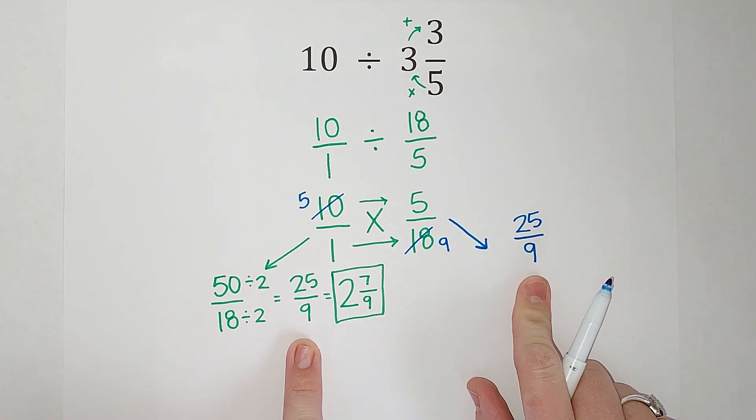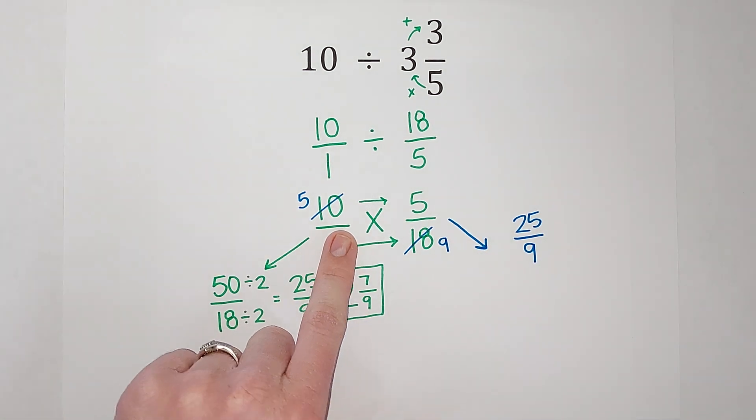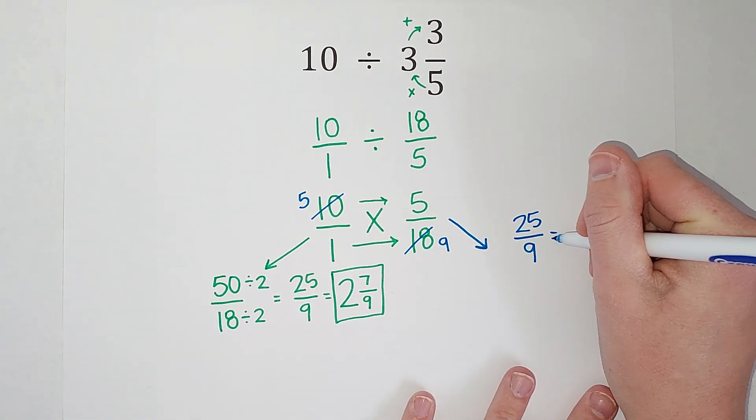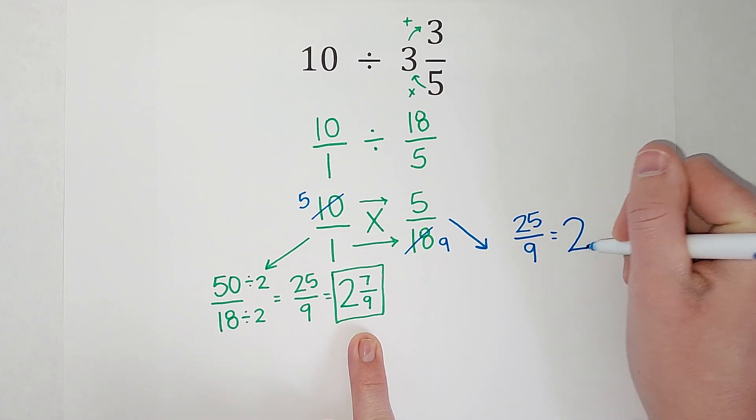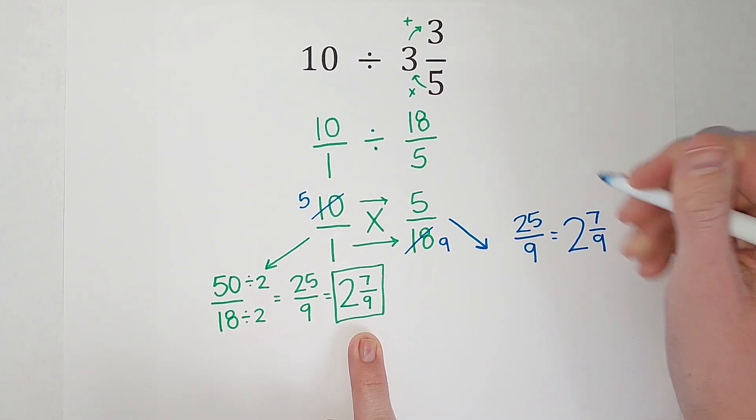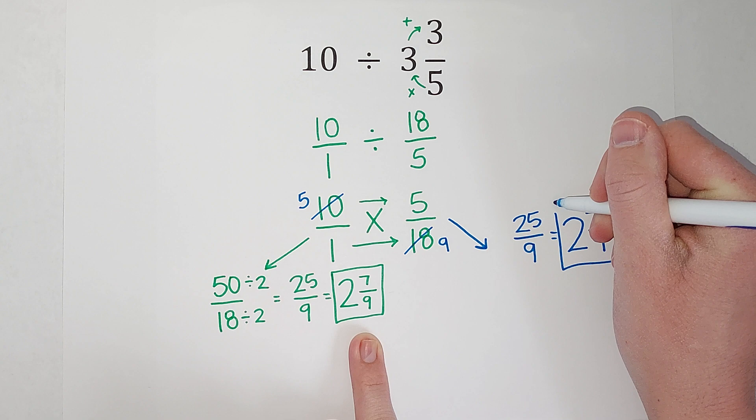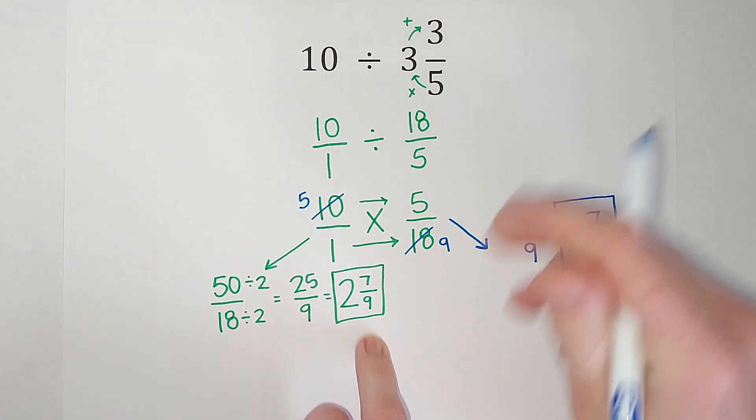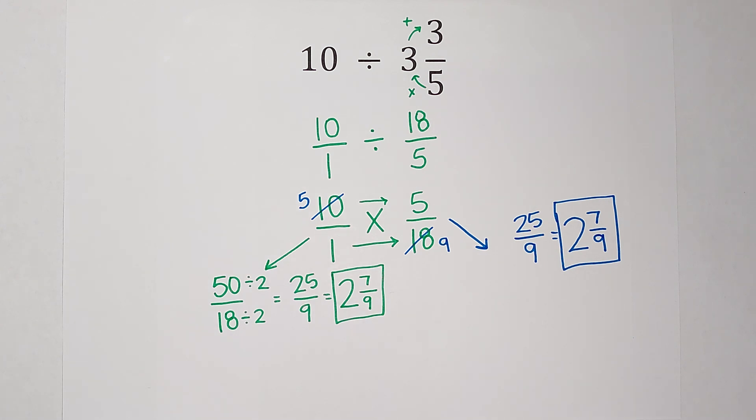Well, look at that. So we did the same thing, we just simplified first, and of course, this will convert to the same mixed number. All right, so whichever one of those ways made more sense, go ahead and do it that way. But hopefully this made sense. 10 divided by 3 and 3/5 gives me 2 and 7/9. Thanks!